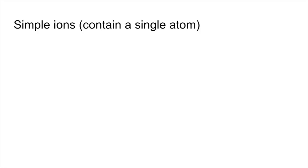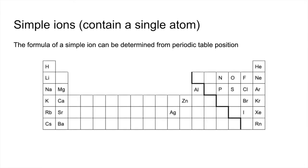So we'll start with the simple ion. These contain a single atom. We can determine the formula of a simple ion from periodic table position. Starting with these, these all form a 1 plus ion. Obviously these are fairly straightforward. Group one, lose one electron to get the full outer shell that's underneath. And that gives them a 1 plus charge.